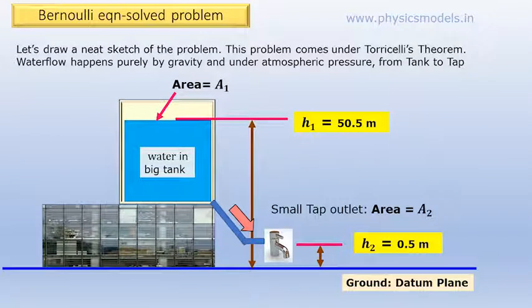You can see a building with a tank on the top. The water is shown in blue colour and the height of the water stored is at 50.5 metres from a datum plane which is the ground.